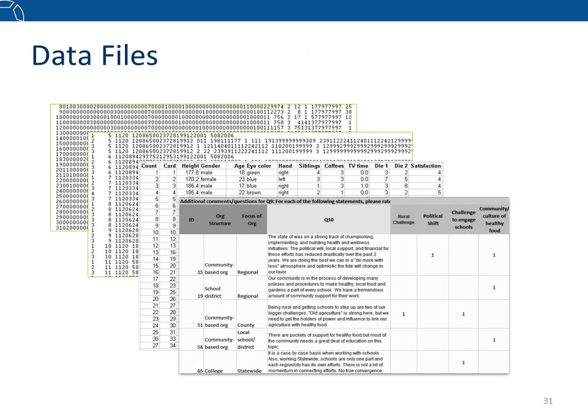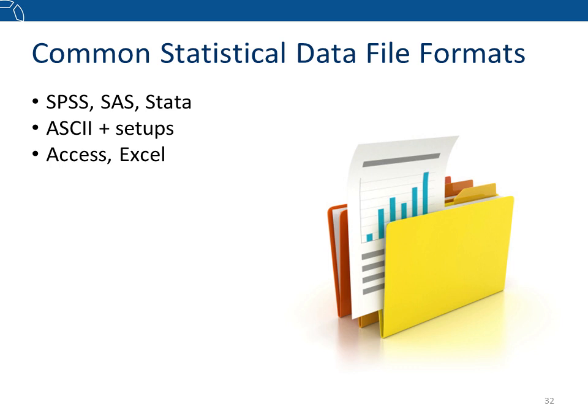Now let's move on to the file-level structure of data. Data files can come in a wide variety of formats. For statistical data, it is easiest to share in a statistical package format like SPSS, SAS, or STATA files. ASCII text format with statistical setups is also acceptable and can easily be converted into other formats. Data in relational databases, Access, Excel, or comma-delimited or tab-delimited text files are also acceptable.